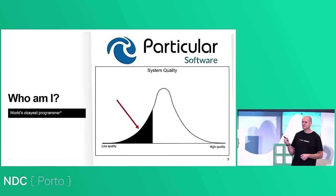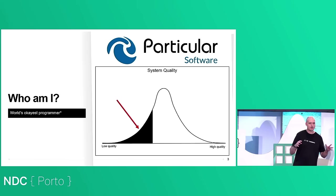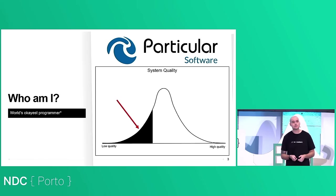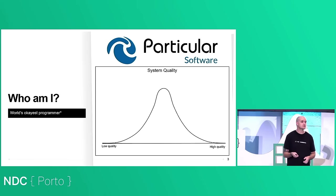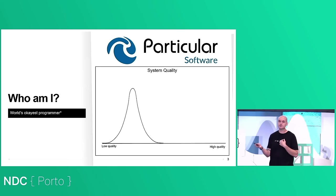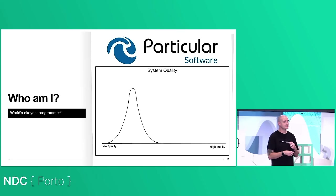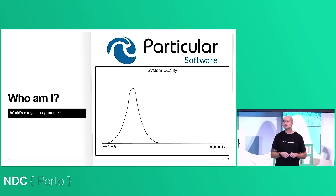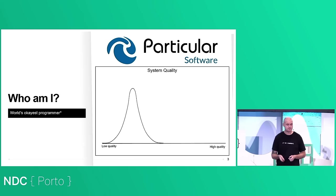Because I only see systems in the bottom section of the quality graph, as far as I'm concerned the distribution is skewed entirely to the awful side, and we should feel ashamed as an industry of what we're doing to our customers — especially given how much some of us are able to charge them.